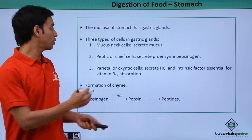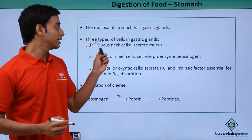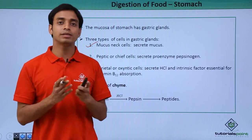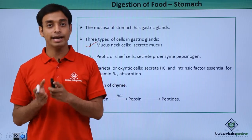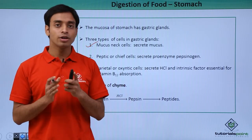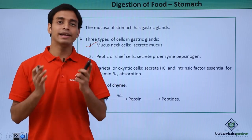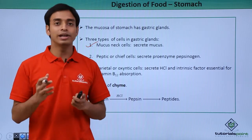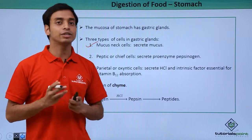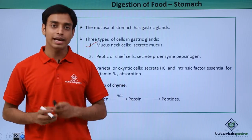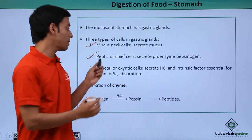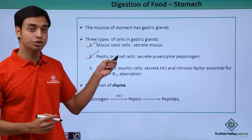First of all, the mucus neck cells — these secrete mucus. We know mucus helps in lubricating and also has a function of protecting the wall layers of the intestine and the stomach from the acidic juices like HCl.